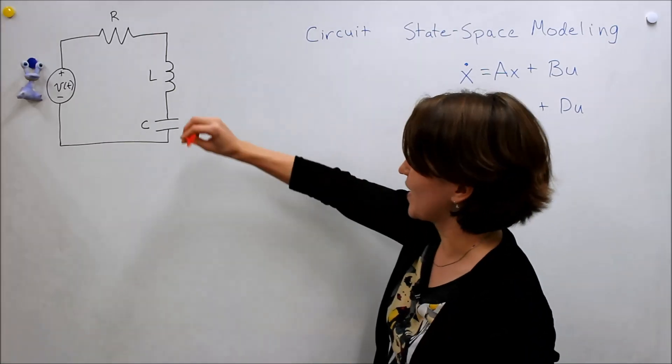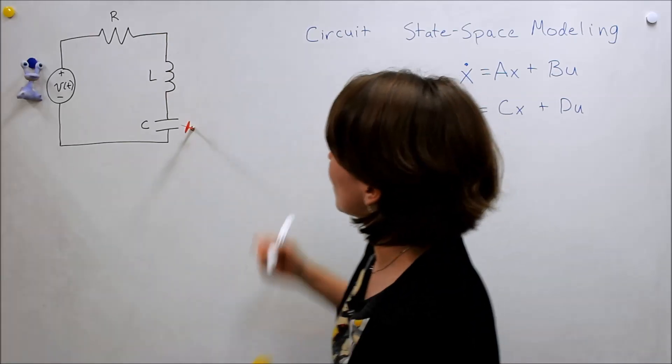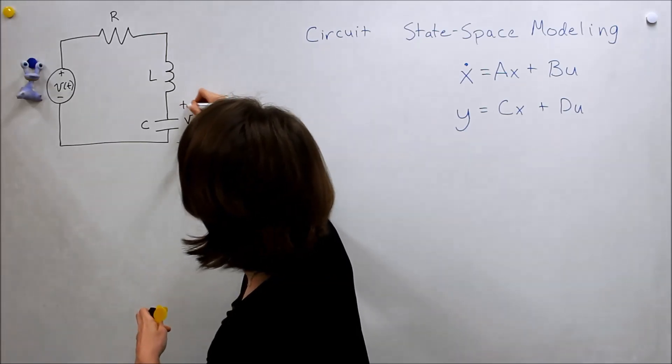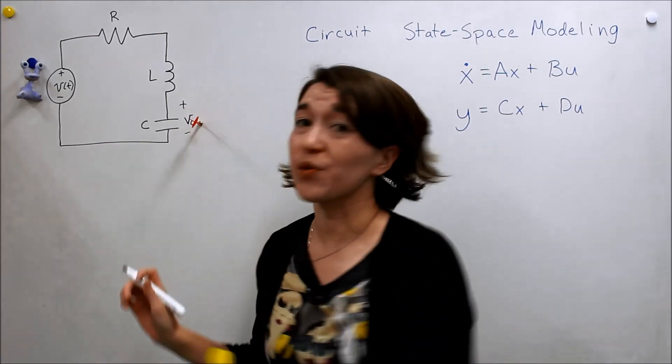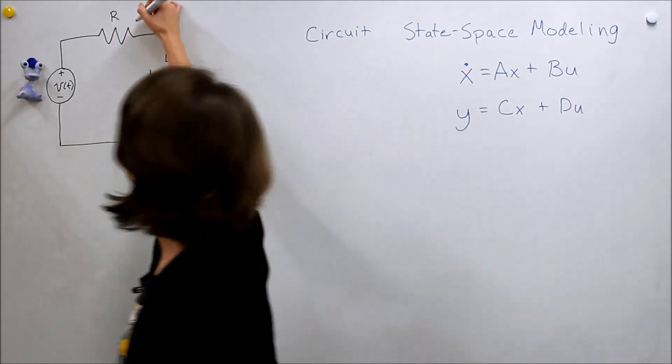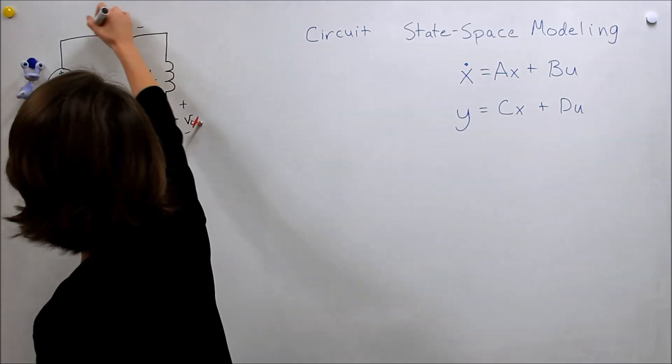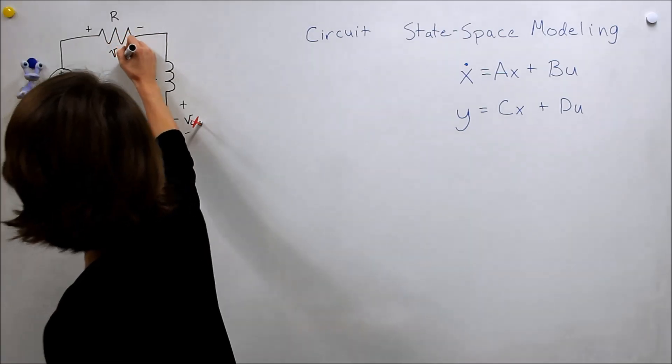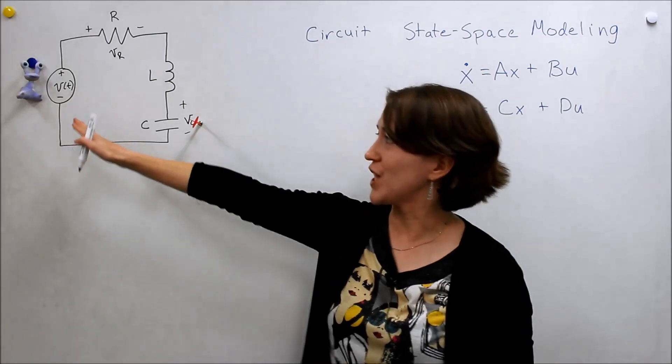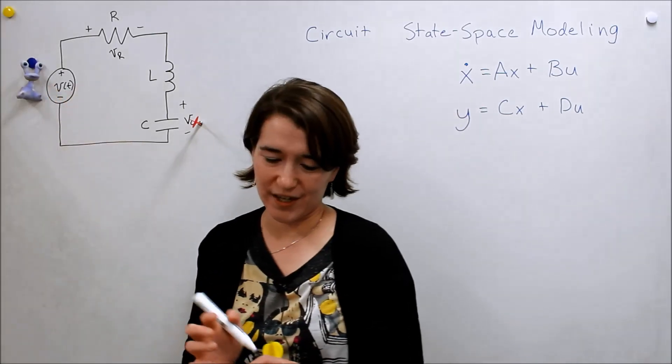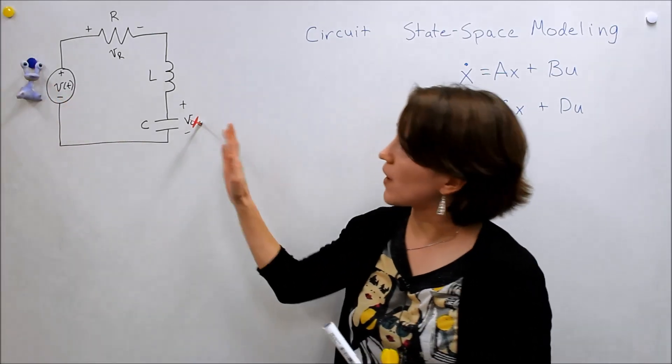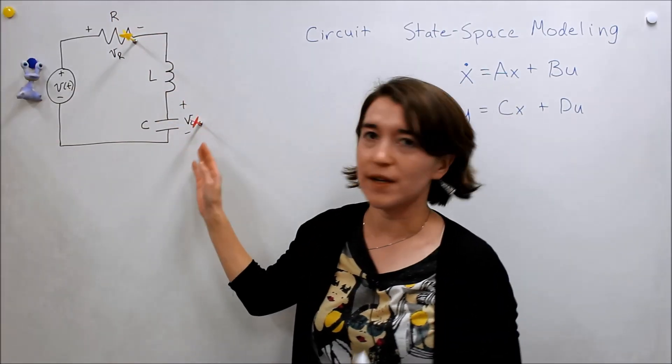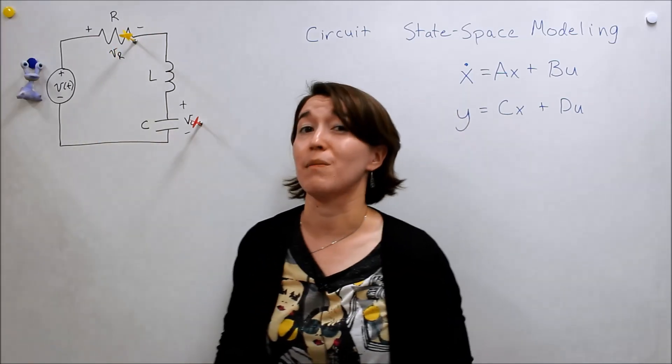One of our outputs will be this voltage, the capacitor voltage VC, and the other one will be the voltage over this resistor VR. Our input is Valerie, she's controlling our voltage here on the input. So let's model this system, these are our output one and two.